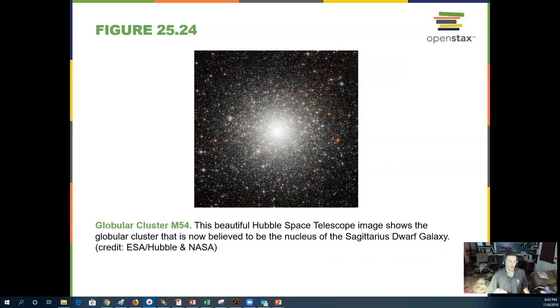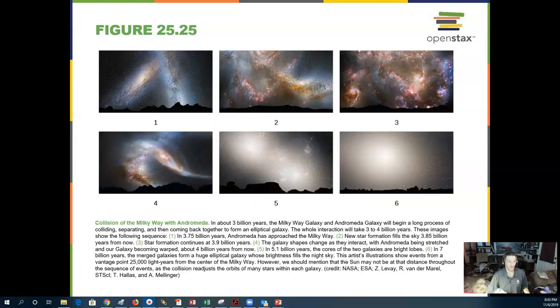Here's a globular cluster that goes around our galaxy. This is M54, taken by the Hubble Space Telescope.